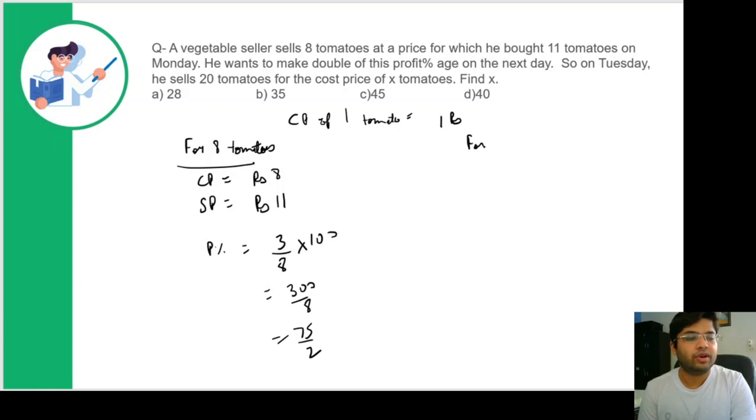So for 20 tomatoes, cost price of 20 tomatoes would be 20. Selling price would be equal to X tomatoes. And he wants to earn a profit percentage of 75 percent because it's double of what was earned on Monday.